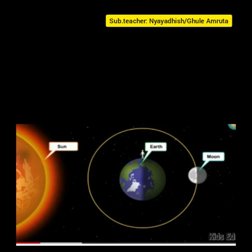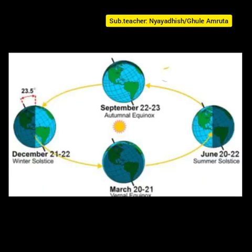In this period in the northern hemisphere, it is the nights that are longer than the days. The northern hemisphere gets less heat and it is winter there. Note that there may be differences in these dates due to the leap year.